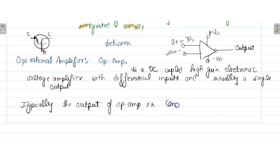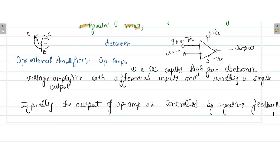The output of the op-amp is controlled by negative feedback. We control the output by using a negative feedback configuration in the op-amp. I think you understand the differentiating points between the operational amplifier and the transistors. Thank you for watching — if you like the video, please subscribe and share it.